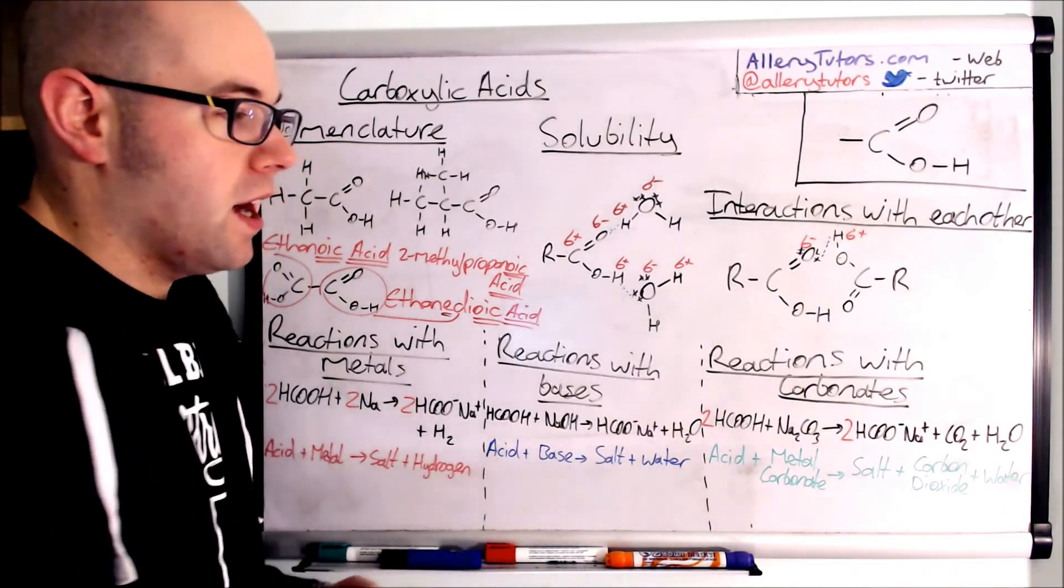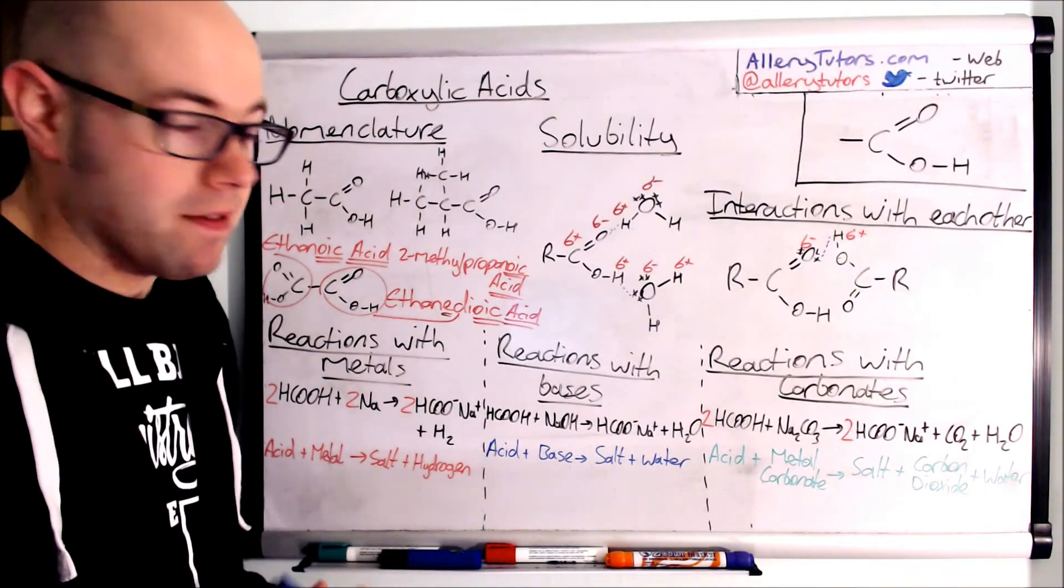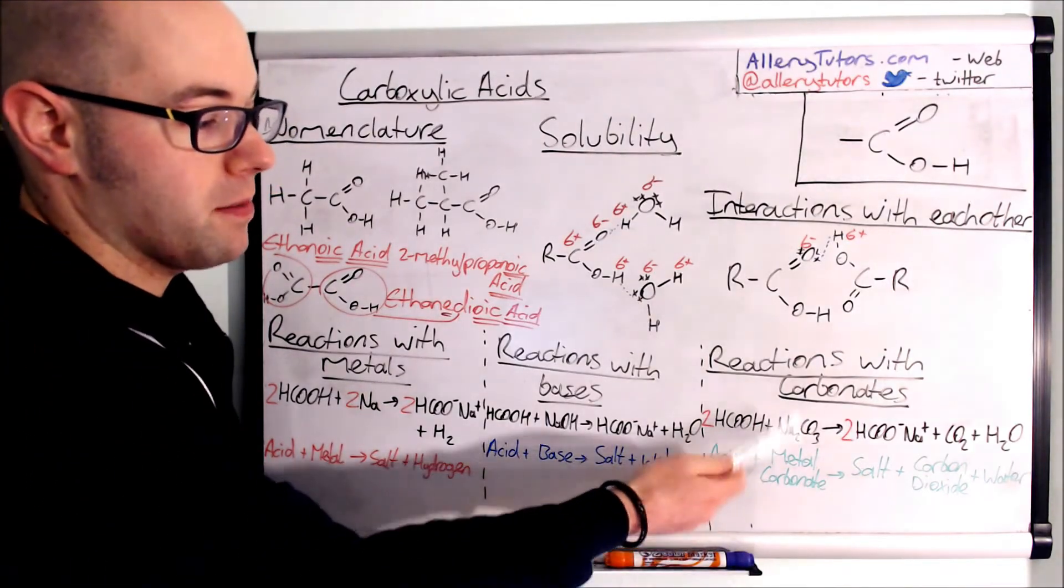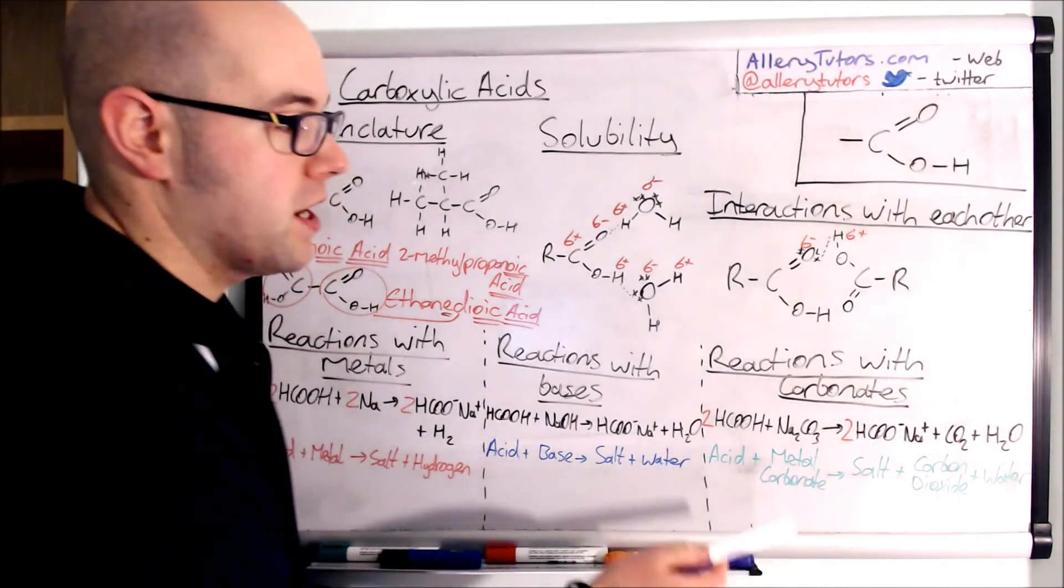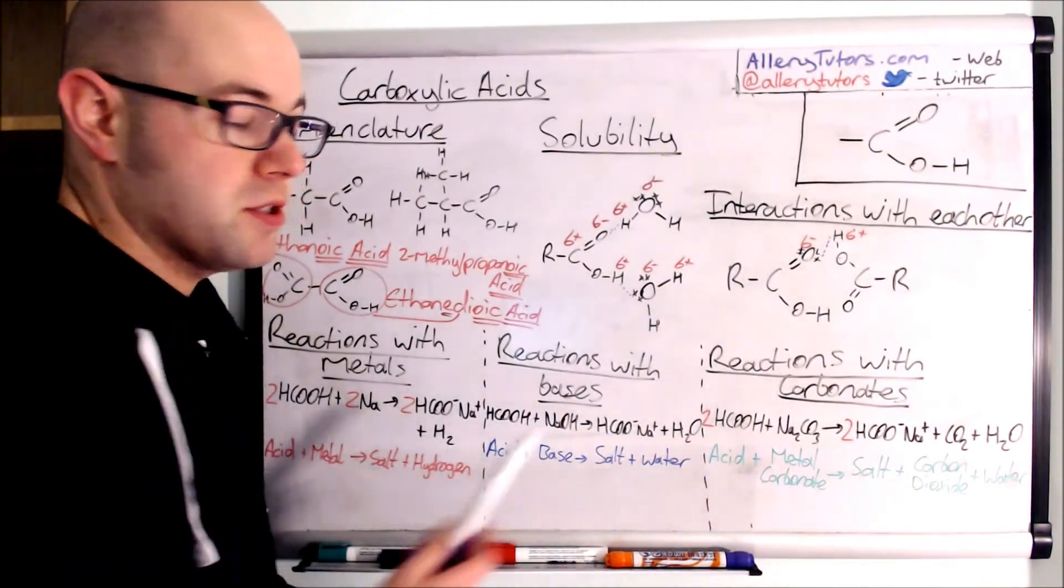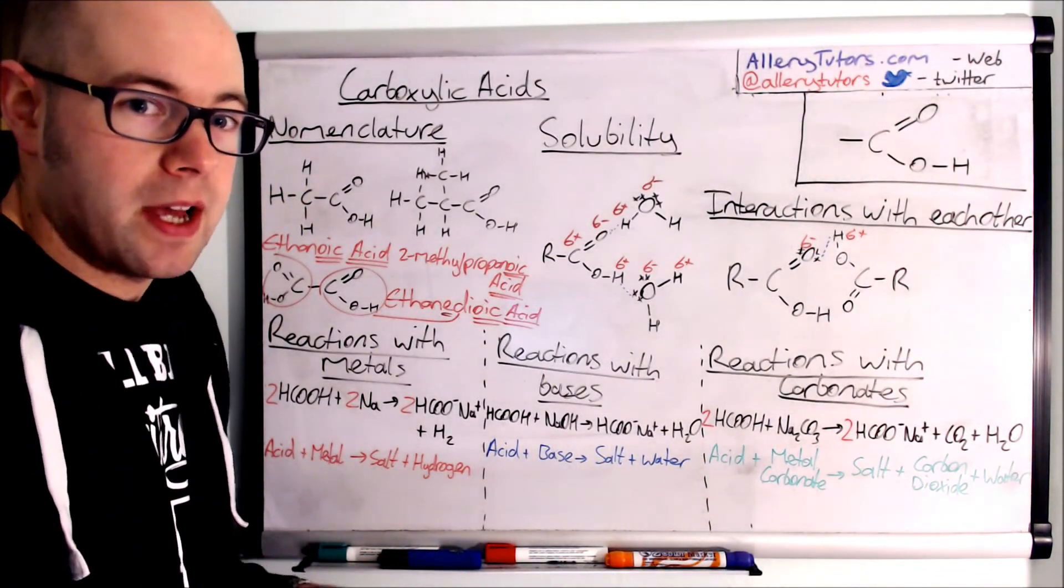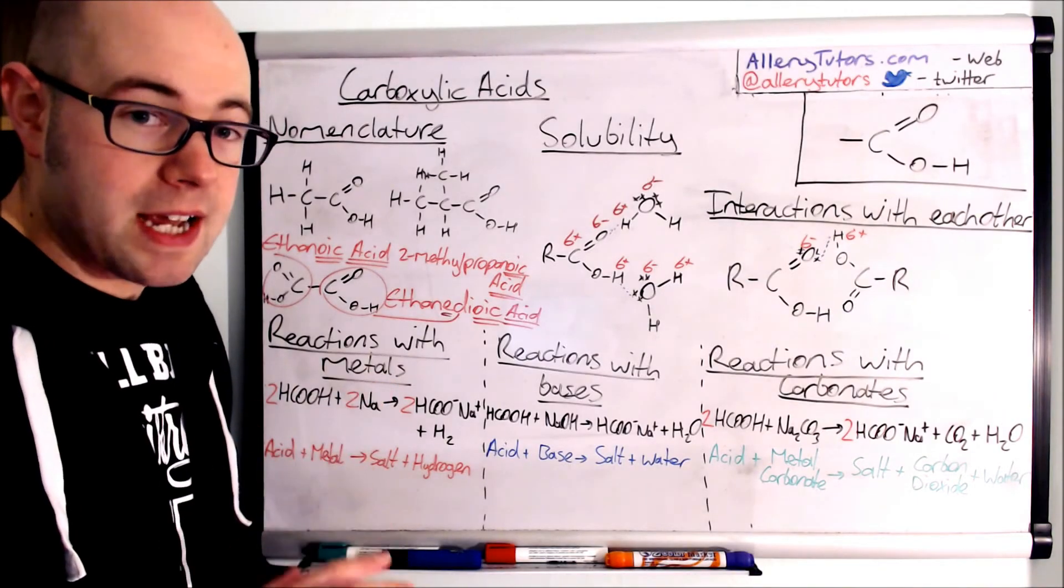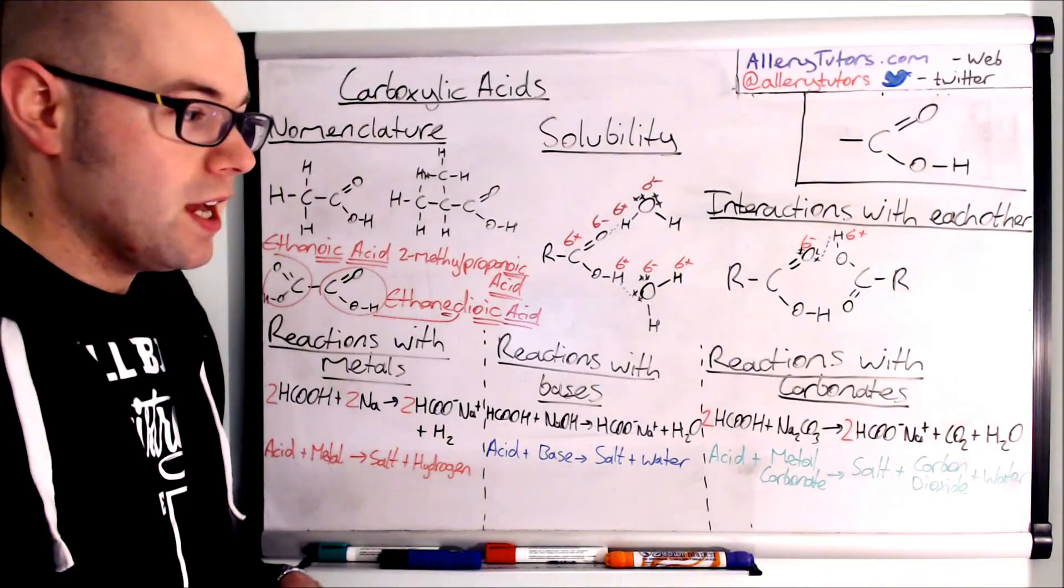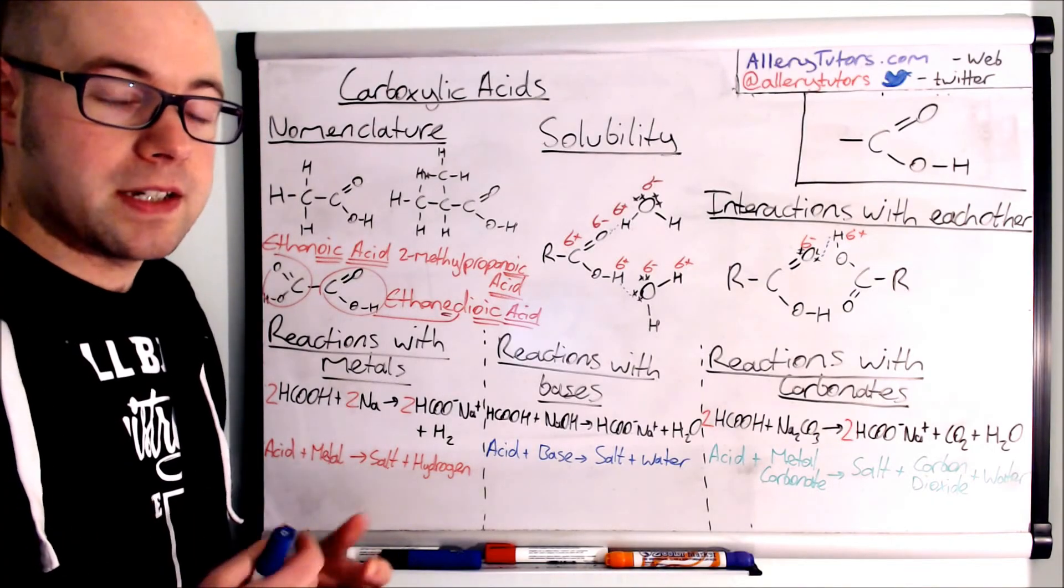Okay and the last bit are reactions with carbonates. Again a standard generic equation. Acid plus carbonates or metal carbonates will form salt plus carbon dioxide plus water. So very similar to the base one except you do form carbon dioxide now. So a classic sign of a carbonate is actually you would see effervescence. So one of the tests for carbonate in chemistry is if you add an acid to it you should get bubbles given off and that's a test for a carbonate.